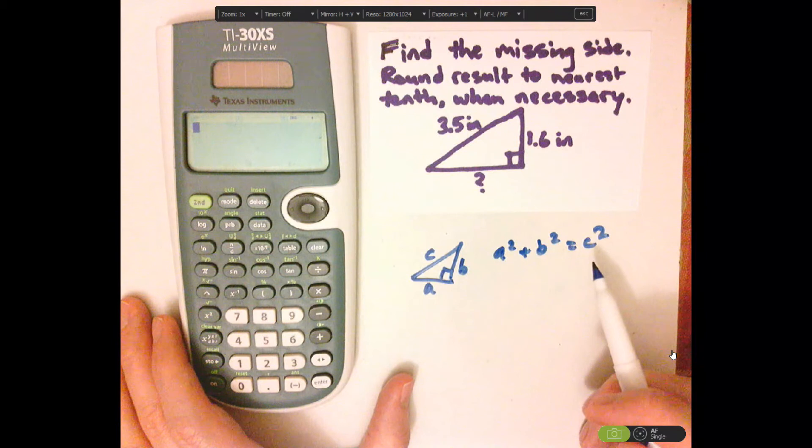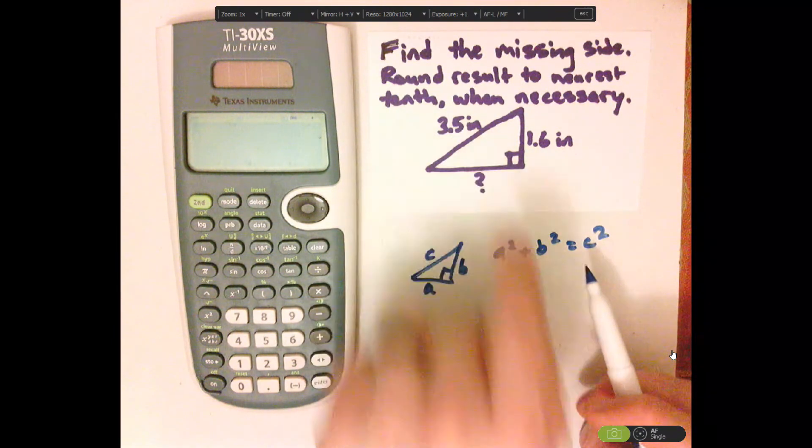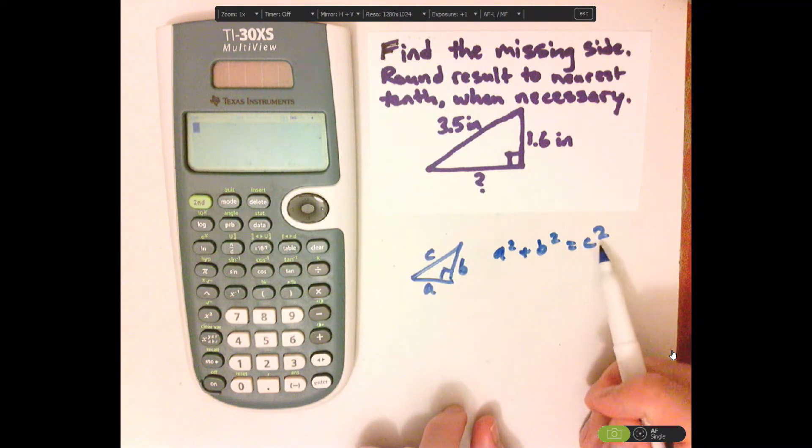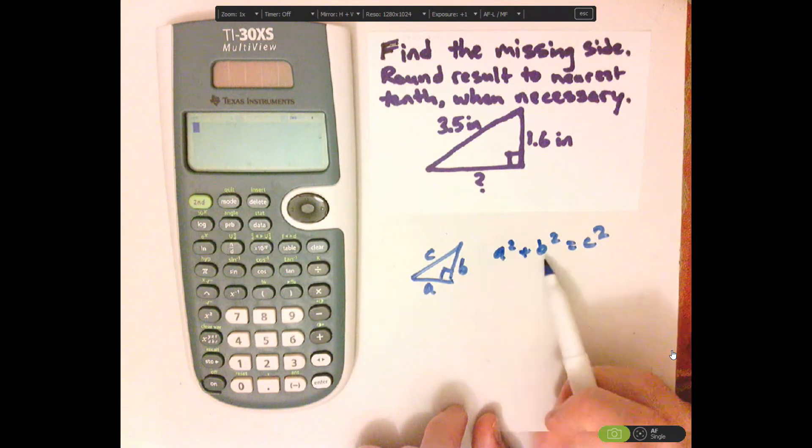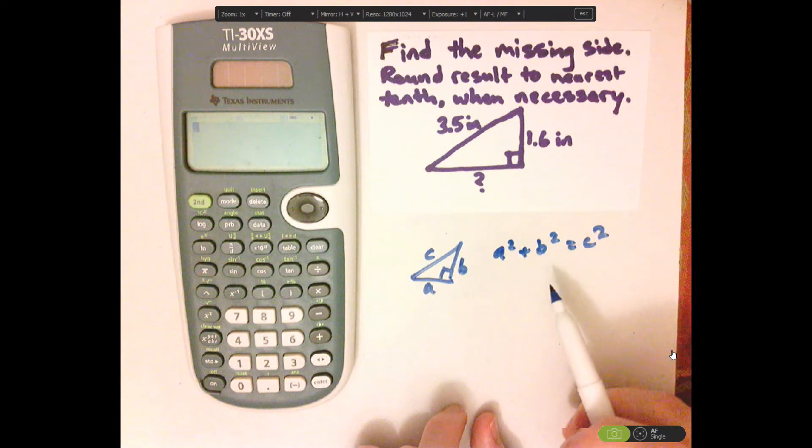Now, if I was just solving for C, and here I'm not because we already have the hypotenuse, I would just be able to add these with the squares, and then square root that, and that will give my answer.